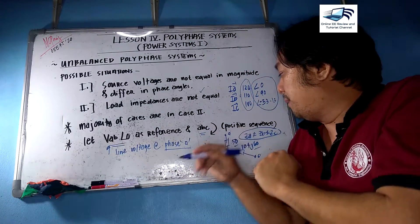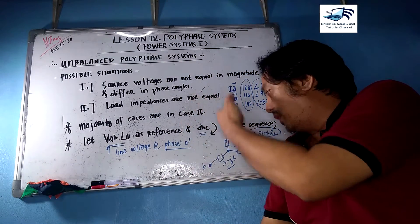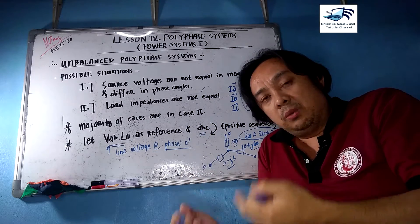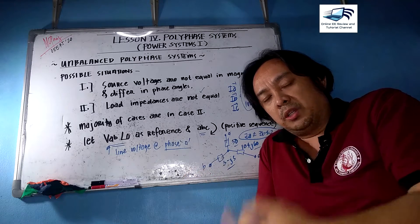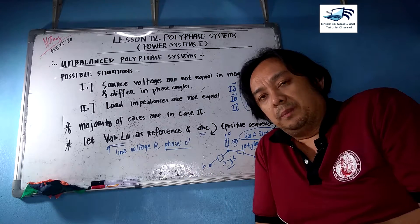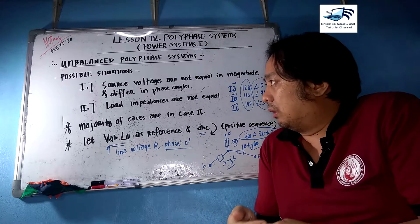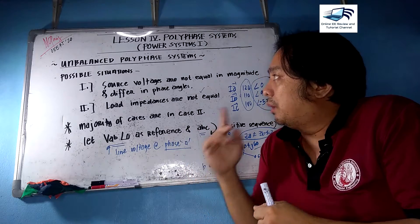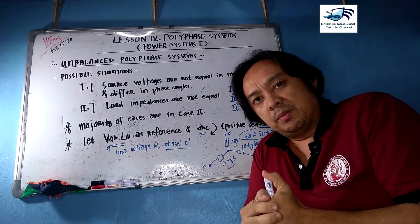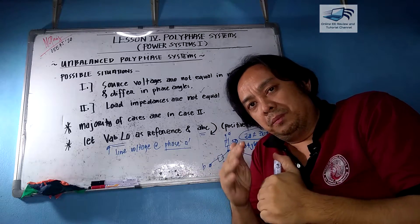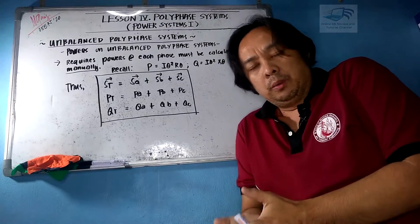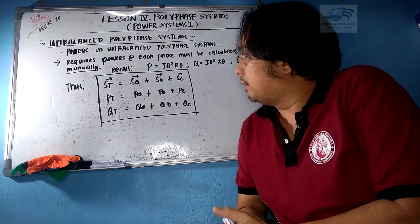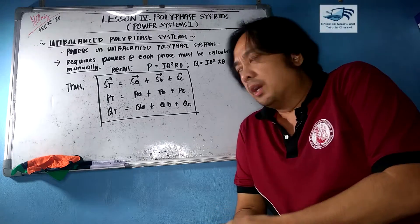We also assume an ABC sequence — also called ABC clockwise or positive sequence — if no sequence is specified or assumed in the problem. We will now continue our discussion on unbalanced polyphase systems, so stay tuned.